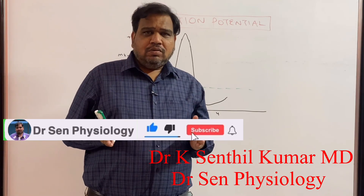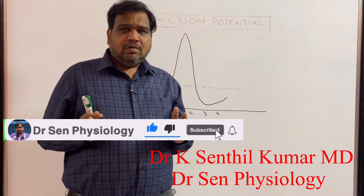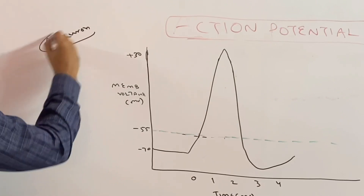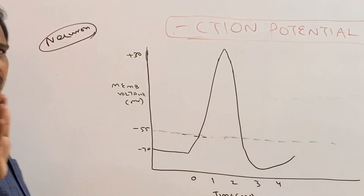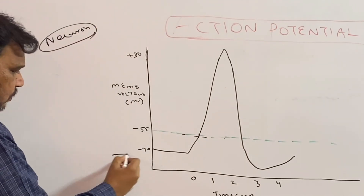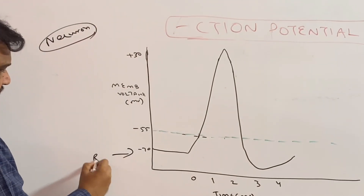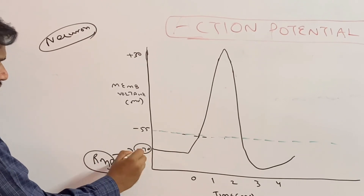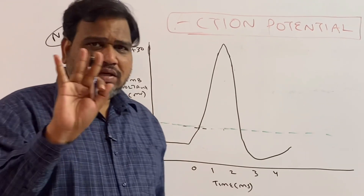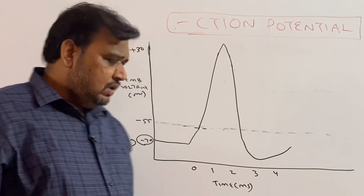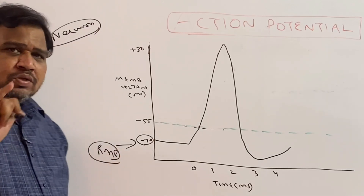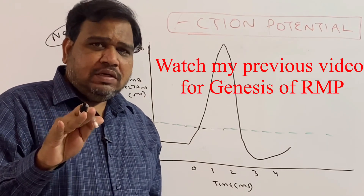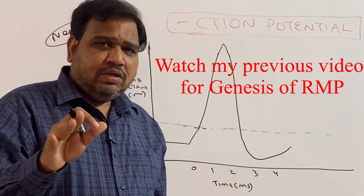Good morning students. Today we are going to discuss a very important topic: action potential of a neuron. In the last class we discussed how the resting membrane potential of a neuron is minus 70 millivolts, and the three things responsible for resting membrane potential: sodium-potassium ATPase, leaky sodium channels, and leaky potassium channels.